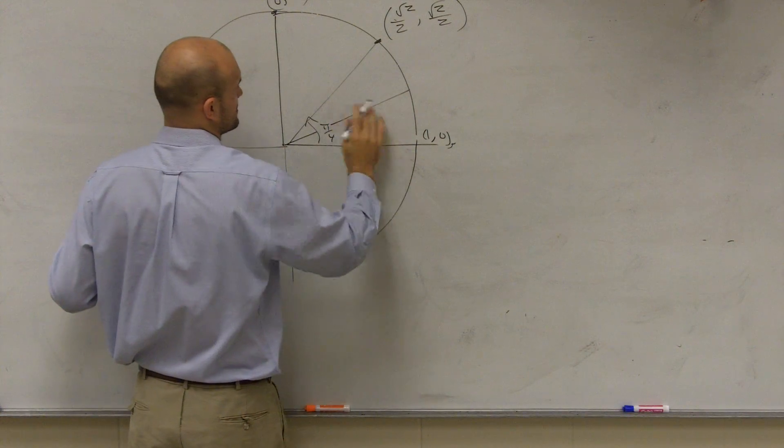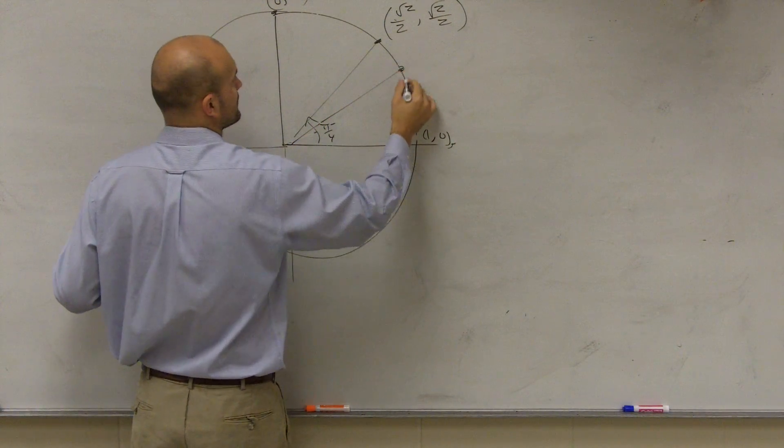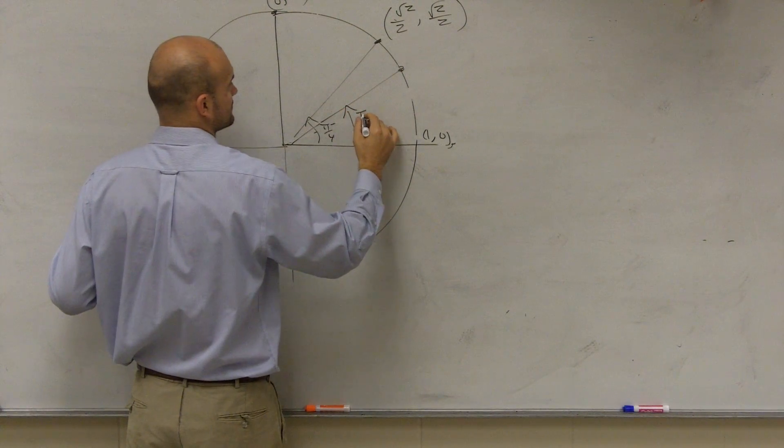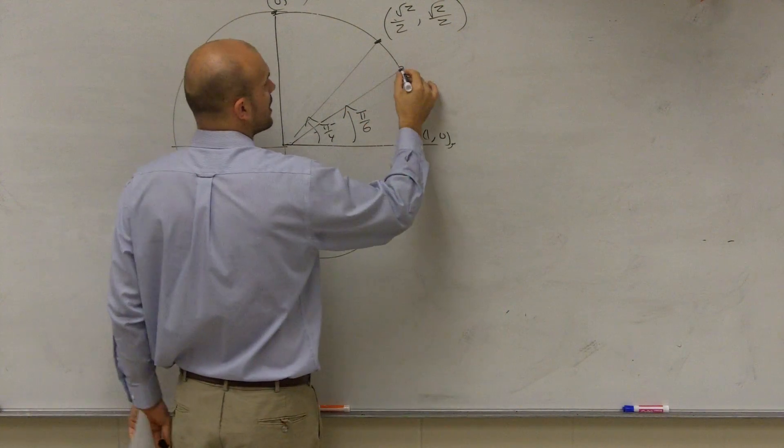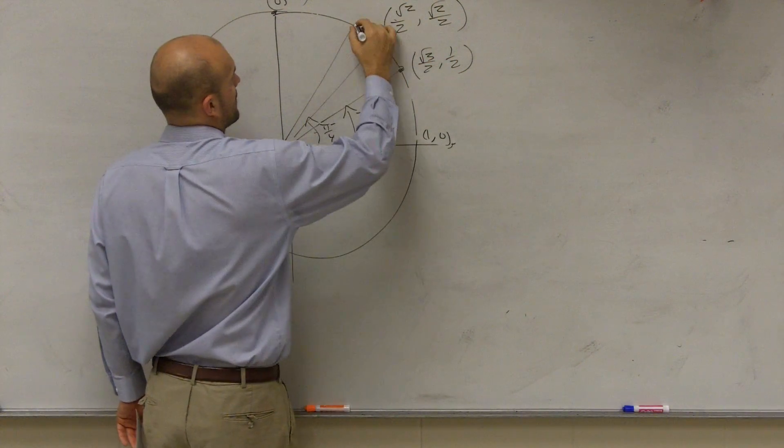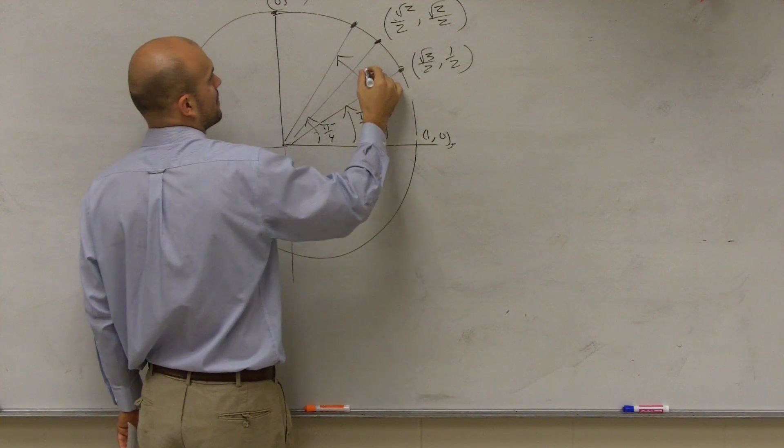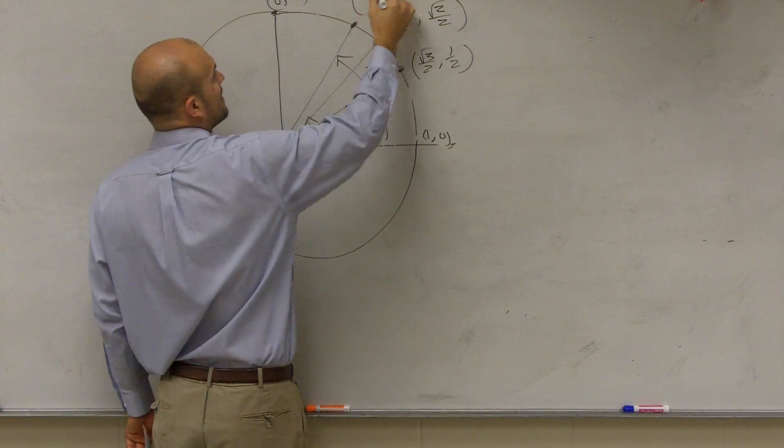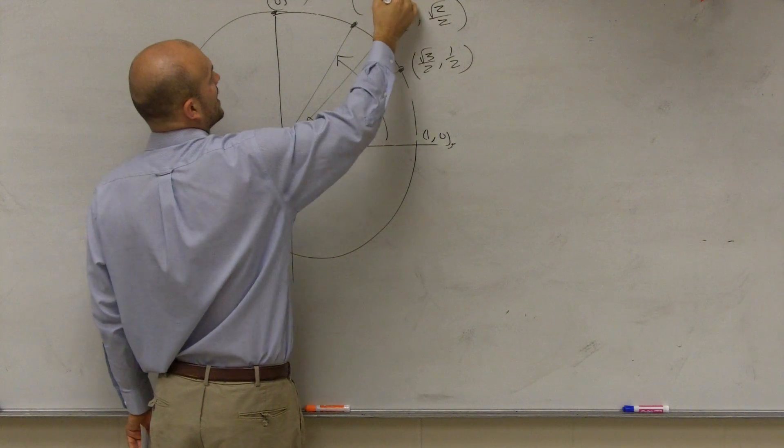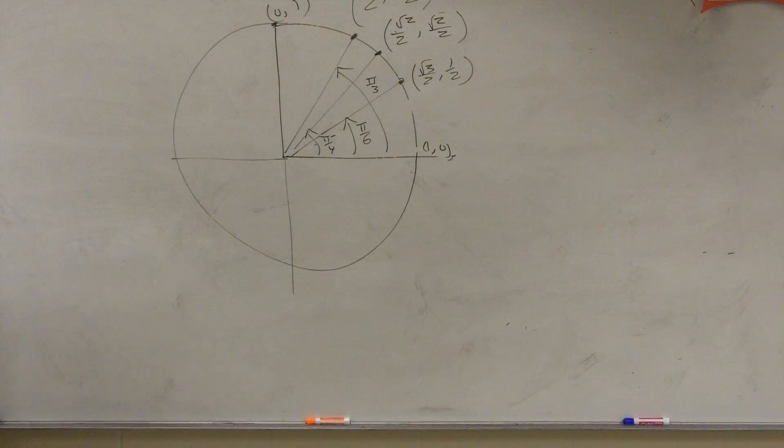Then the next point there, which was, that's a little bit close, which was pi over 6, and that point was square root of 3 over 2, comma 1 half, and then our next point, which was pi over 3, and that point was 1 half comma square root of 3 over 2. So we found out those two points.